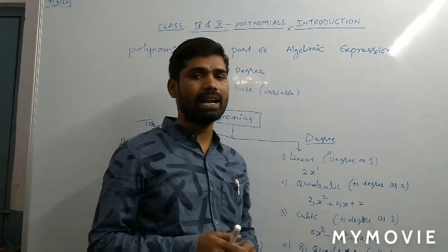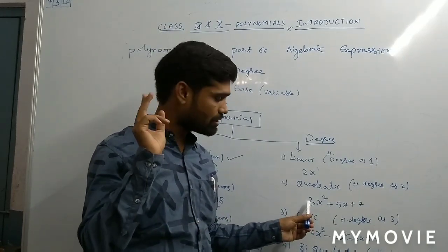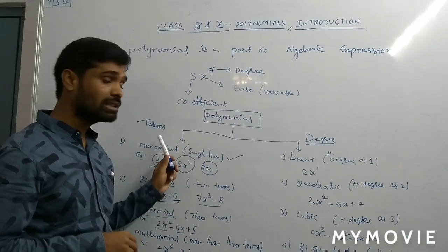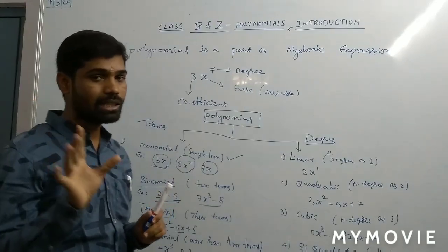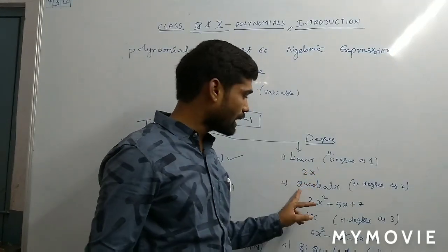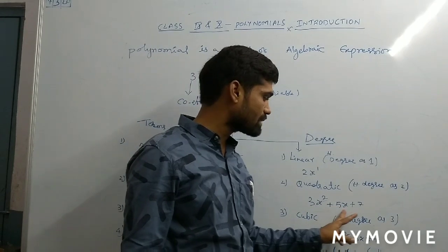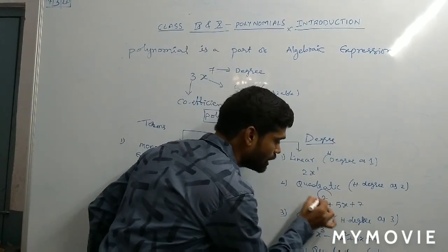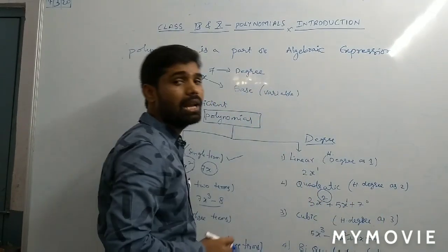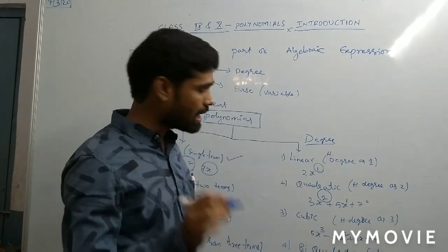Next, quadratic. Quadratic means two — highest degree is two. When an expression has the highest degree as two, it is called a quadratic polynomial. Here we won't consider the number of terms; we consider only the degree. Linear means highest degree one, quadratic means highest degree two. For example, 3x power 2 plus 5x plus 1 — the highest degree is two, so this is a quadratic polynomial.